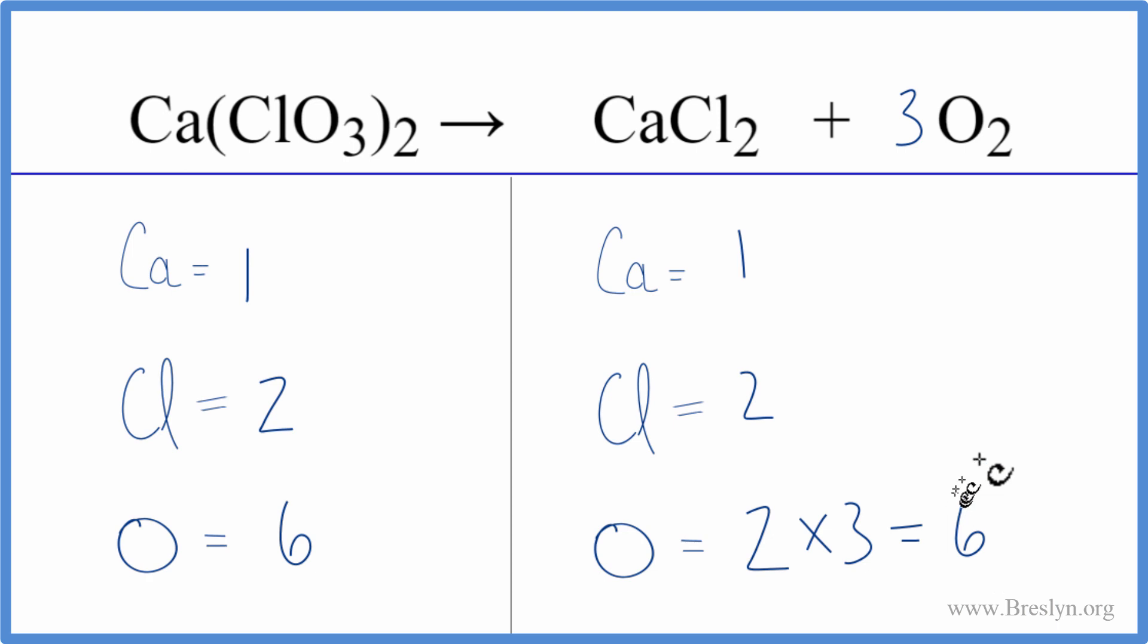This equation is balanced. If you had problems, it may be how we use the parentheses here. Whenever you have something in parentheses, the number outside multiplies by each of those things within the parentheses.